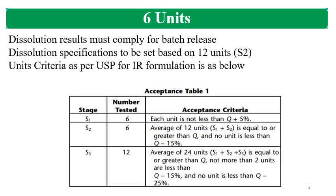Dissolution specifications should be set based on 12-unit data, and 12 units means S2 stage. The units criteria is given in the USP as per this table. S1 stage is 6 units; S2 stage adds another 6 units, making a total of 12 units. In S3 stage, a fresh 12 units are taken, so the total data becomes 24 units.